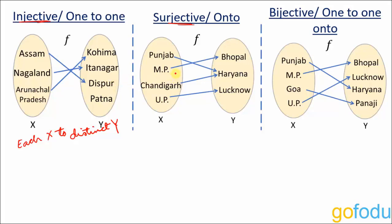Next is surjective or onto. For every y there is an x — it need not be distinct, but all y are mapped to some x. Not a single y is left unmapped. For instance, an earlier example had Patna which was left out, not mapped to any element in X. In a surjective function, no y is left unmapped. Punjab and Chandigarh can both map to Haryana, but the focus is that every element in Y is mapped to some element in X.